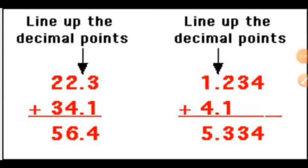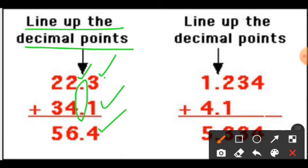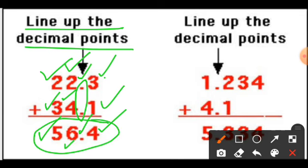Now see over here — you have to add 22.3 plus 34.1. You will have to write the numbers in such a way that all the decimal points are one below the other. After that, carry on with the addition the same way as you do the addition of whole numbers. We always start from the right side: 3 plus 1 is 4. Then find the decimal point — it has been lined up, so below the decimal points you write the decimal point in the same alignment. Then 2 plus 4 is 6, and 3 plus 2 is 5. So you get the answer as 56.4.